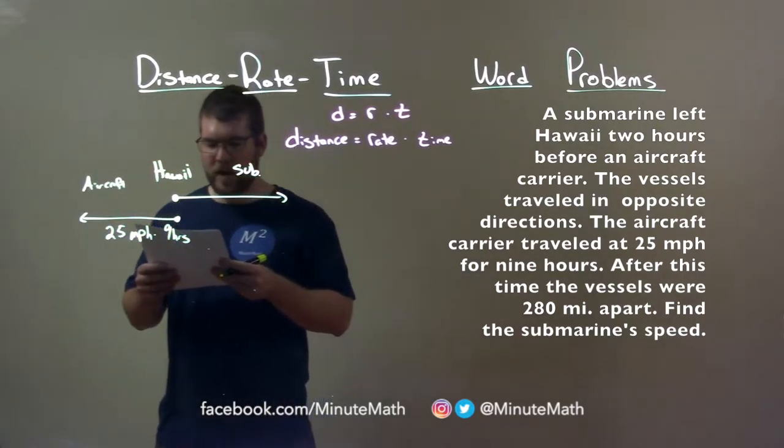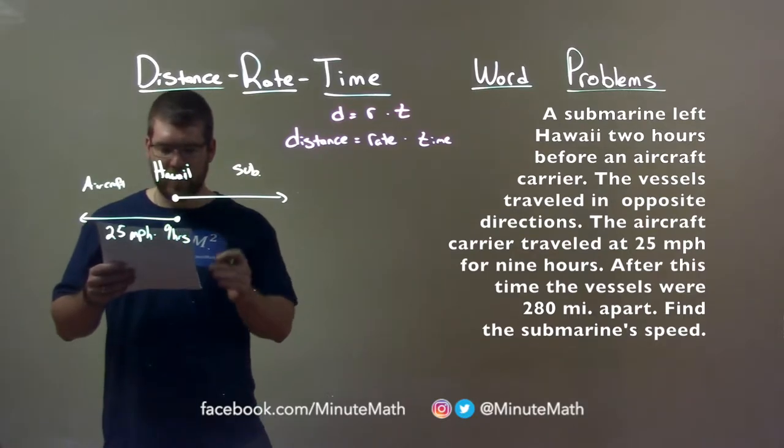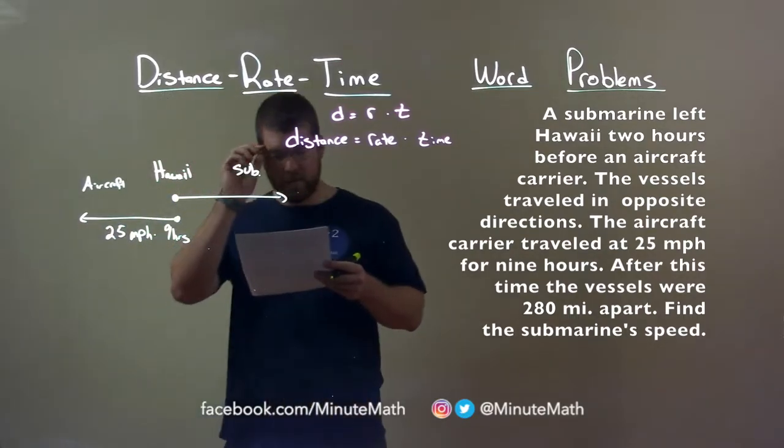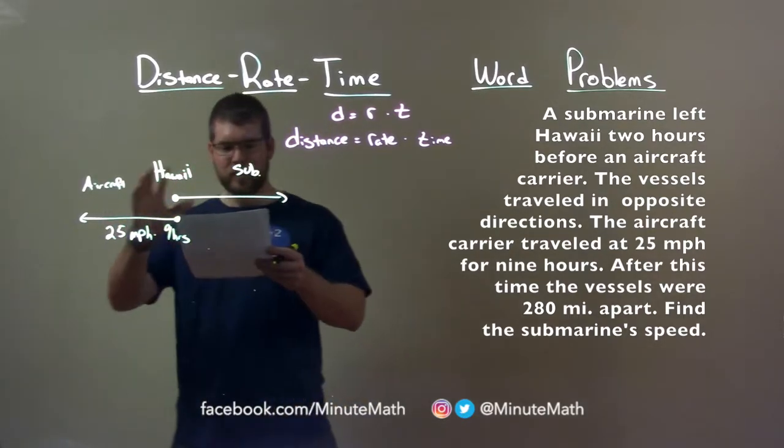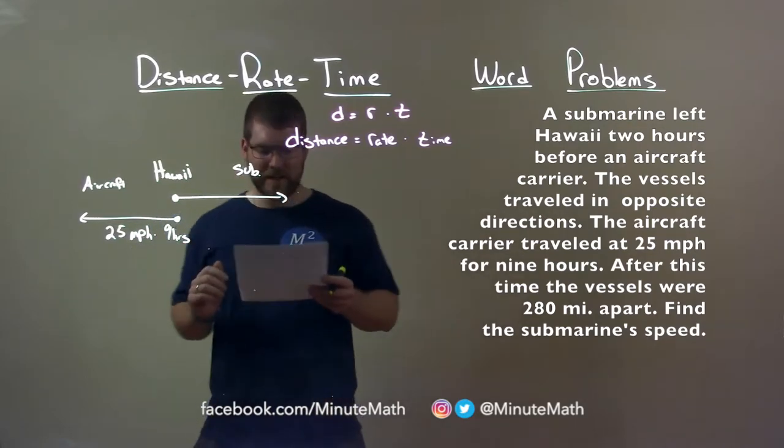After this time, the vessels were 280 miles apart. We have to find the submarine's speed. So getting a picture here of what's going on. We know distance equals rate times time.